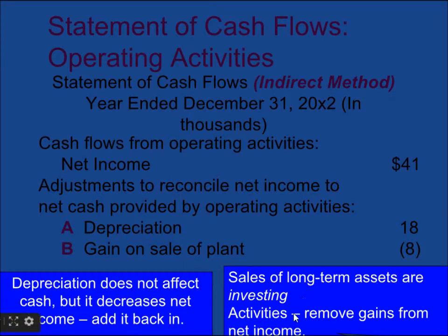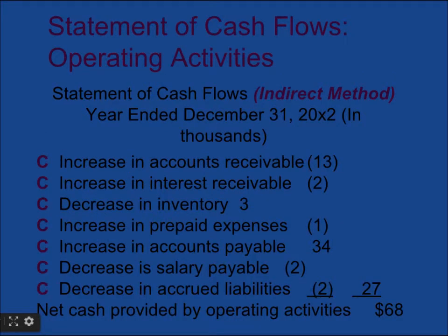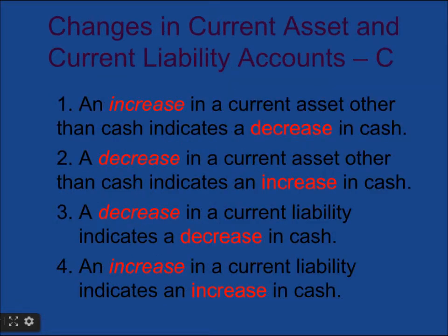Sales of long-term assets are investing activities, so gains are removed from net income for operating activities. From the balance sheet, we calculate the increases and decreases in accounts receivable, interest receivable, inventory, prepaid expenses, and all payables and liabilities from the comparative balance sheet. Then net cash provided by operating activities is calculated. You can work through it by going back to the example.